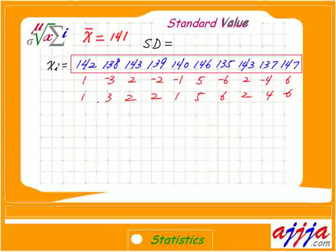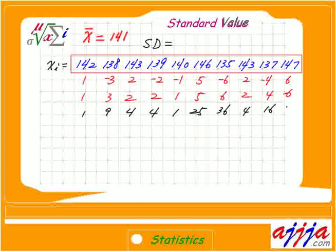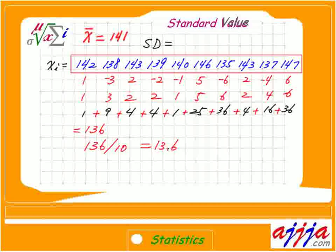Now we square everything. So 1×1=1, 3×3=9, 4×4=4, 1×1=1, 25, 36, 4, 16, 36. Then we find the sum — we add everything together, which gives us 136. Then we divide by how many numbers there are, so 136 divided by 10 equals 13.6. Then we take the square root of that.